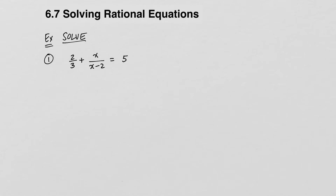In 6.7, we look at solving rational equations. The major change here is we're no longer only looking at expressions — we are now going to have rational expressions involved in an equation. To solve a rational equation, the techniques are very different from simplifying a rational expression. First and foremost, we need to understand the concept of a least common denominator.